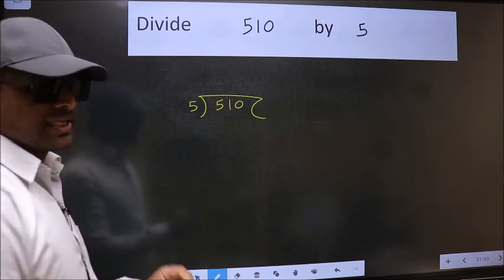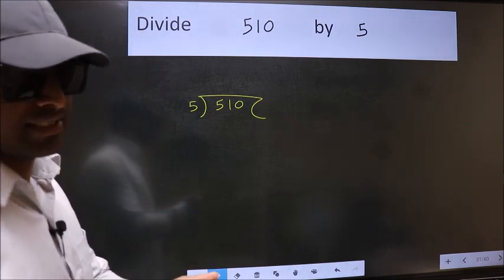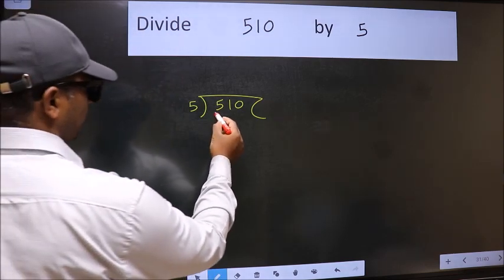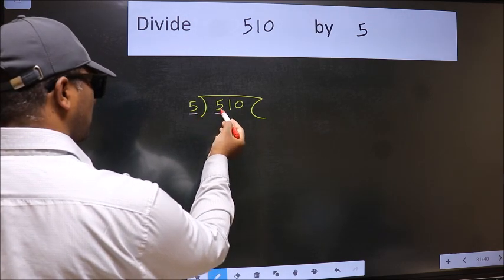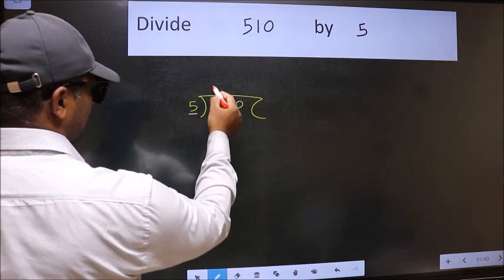This is your step 1. Next, here we have 5. Here also 5. When do we get 5 in 5 table? 5 once 5.